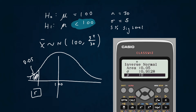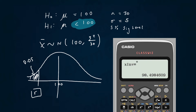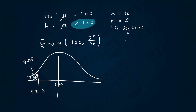The mean is 100, and there we go — we've worked out that value is 98.5 to 3 significant figures. So the critical region is when x̄ is less than 98.5.